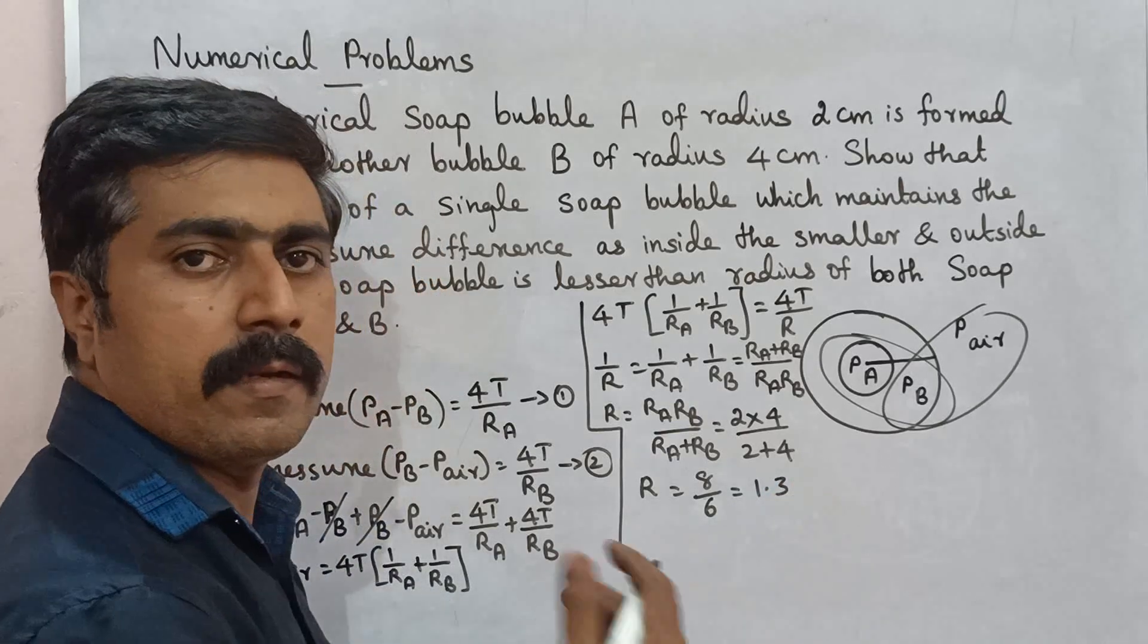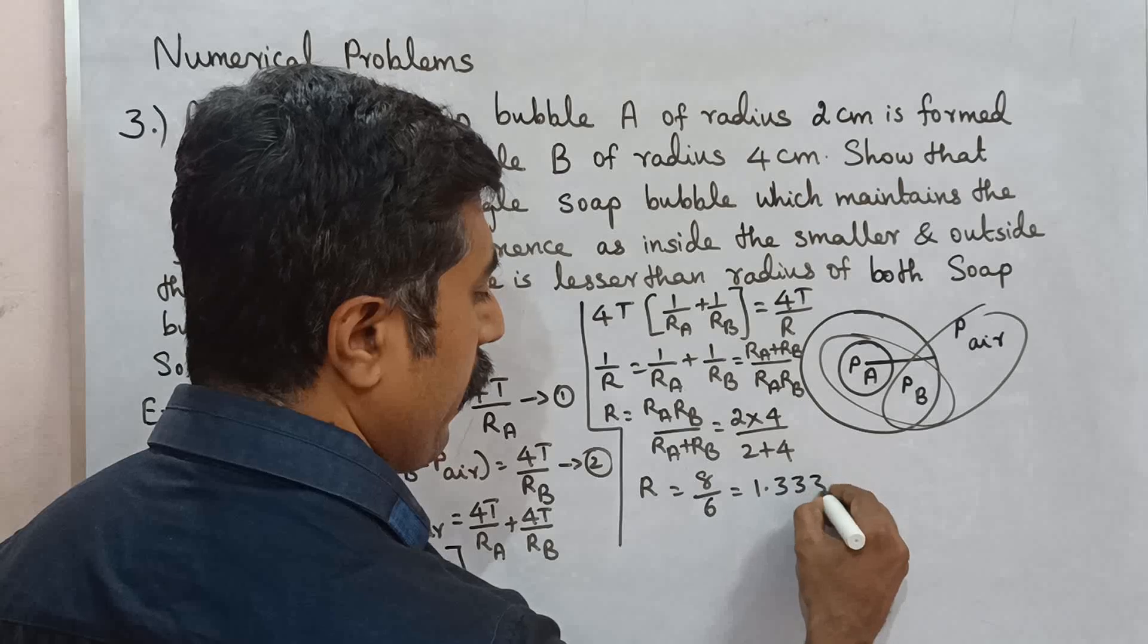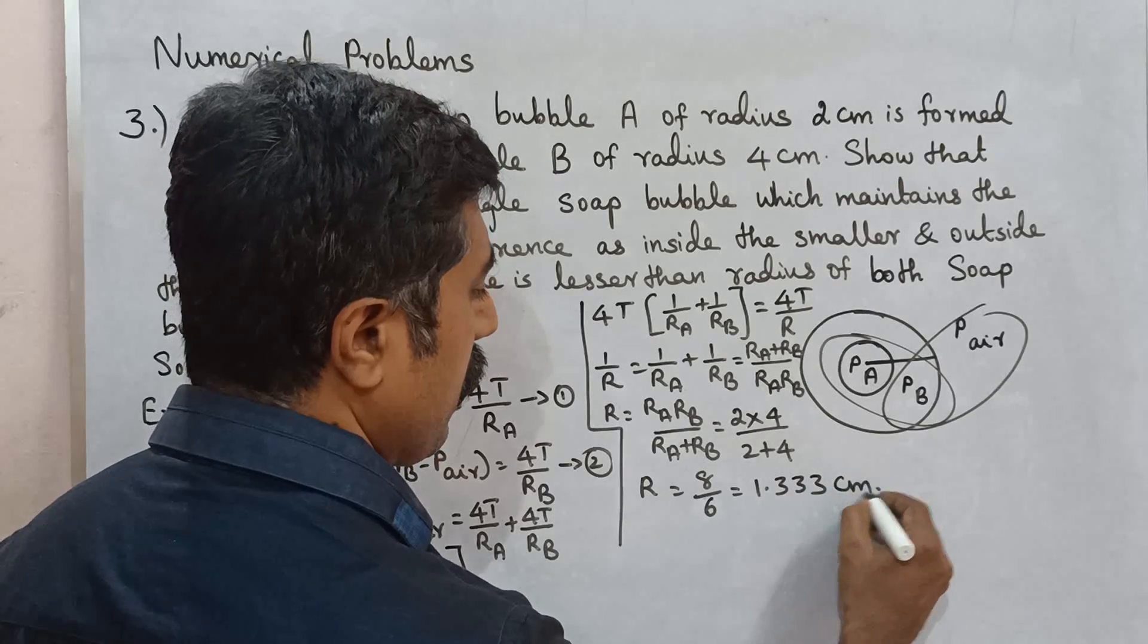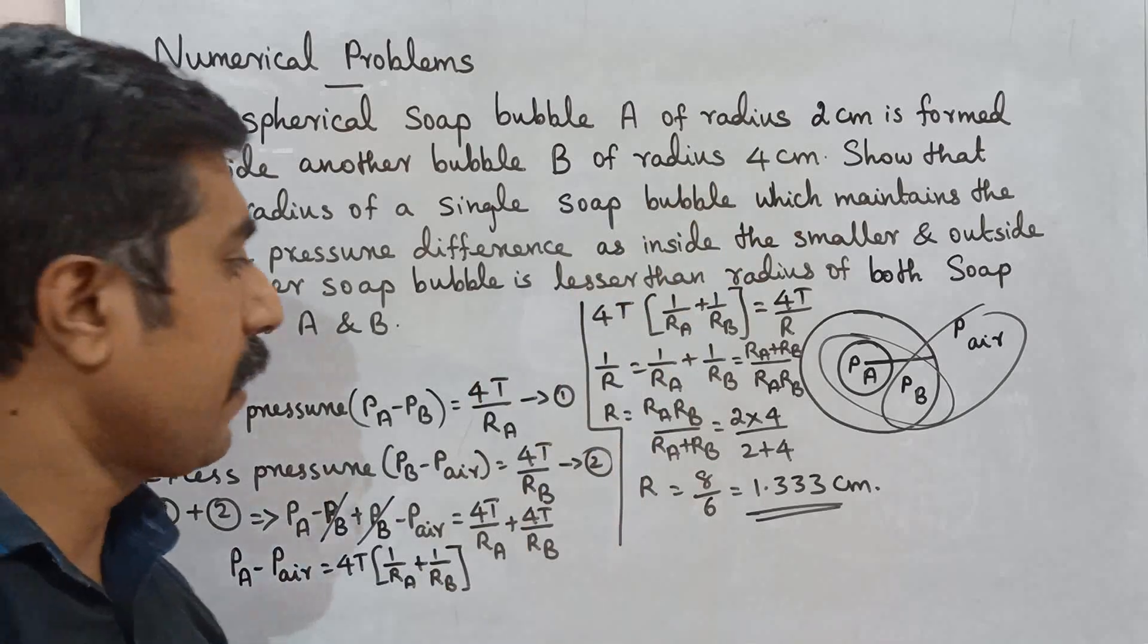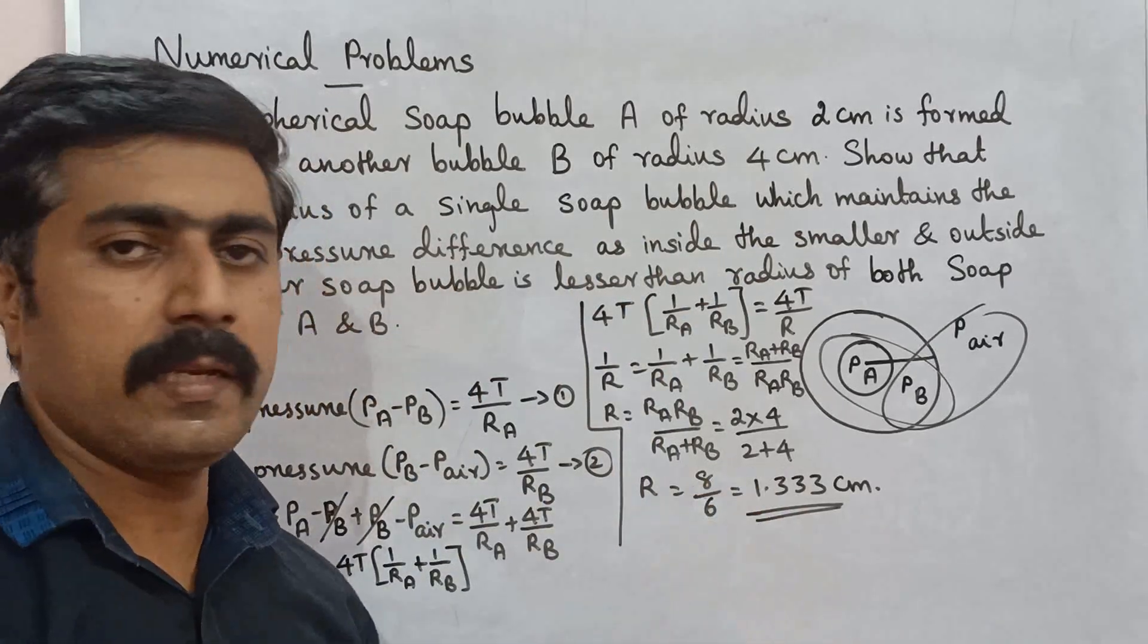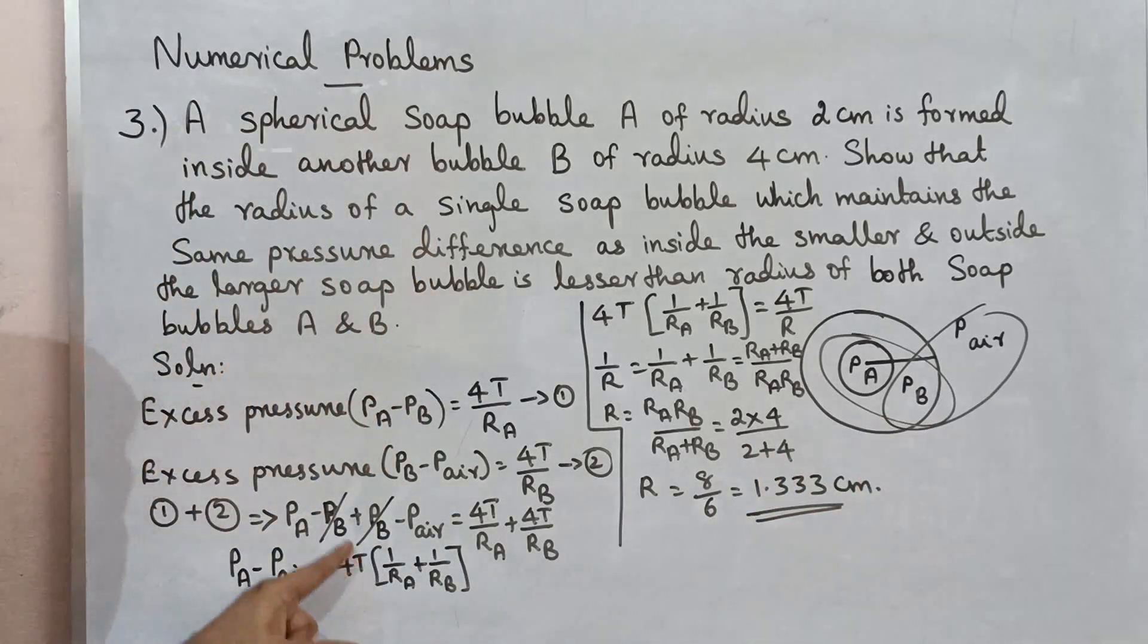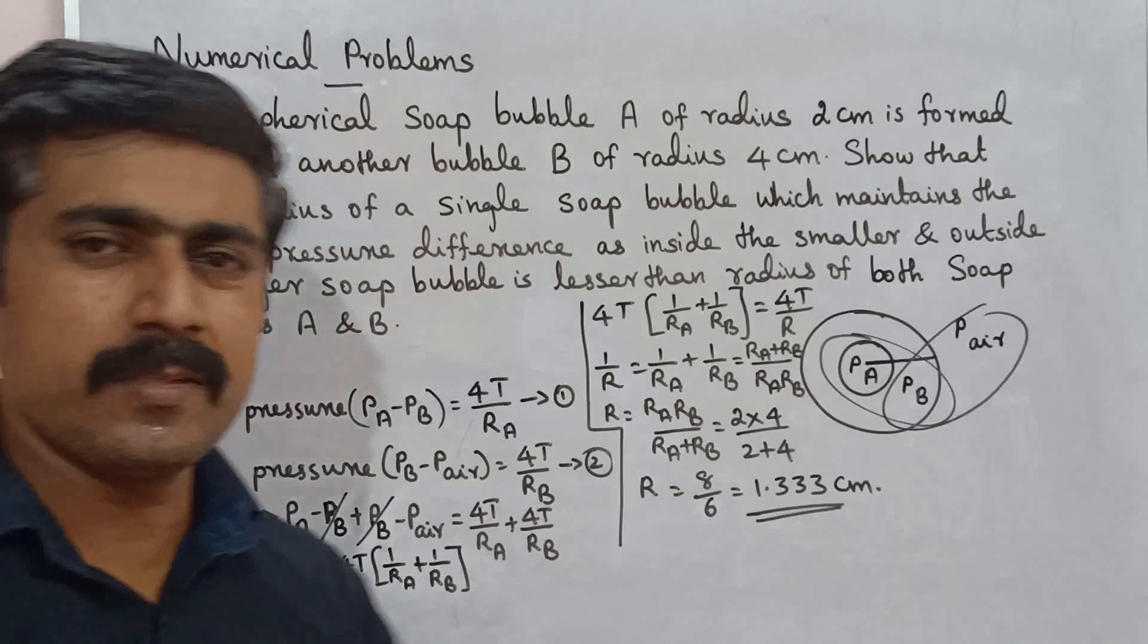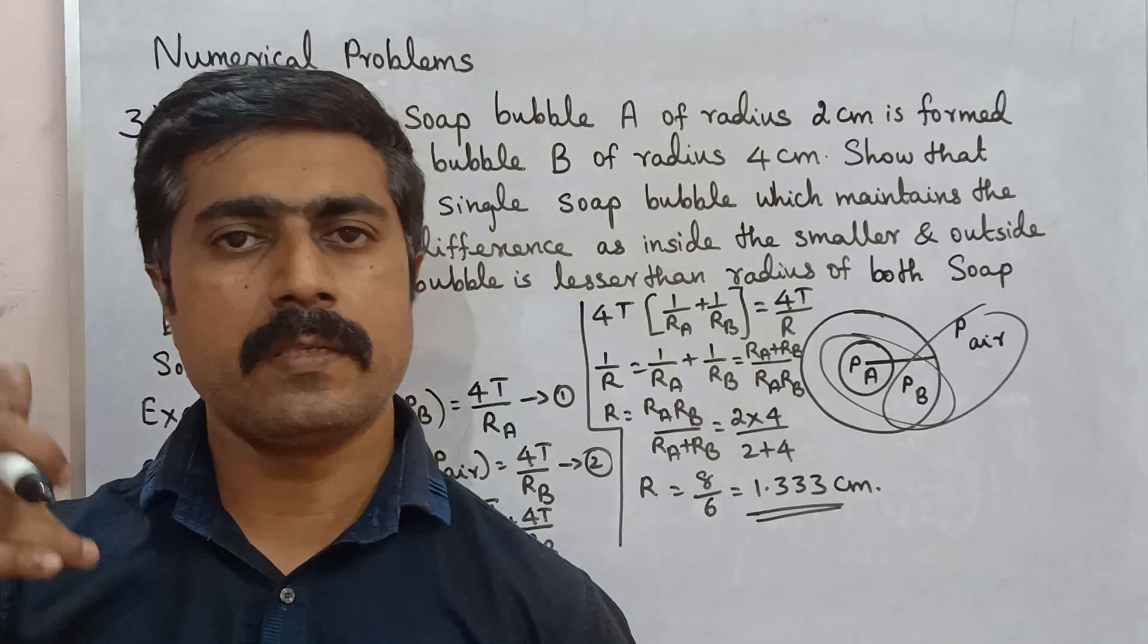So smaller bubble radius 2, the single bubble radius 1.33 and so on. So pressure difference is the same. It's very simple problem. All the best.